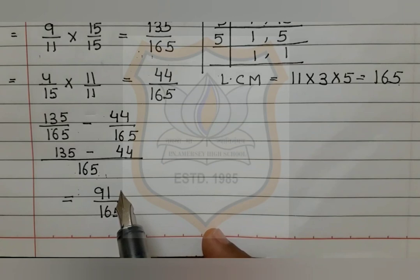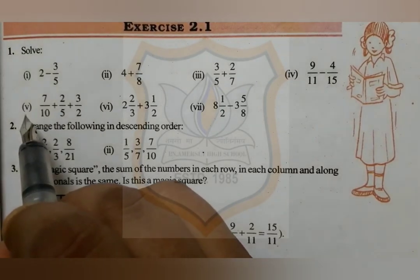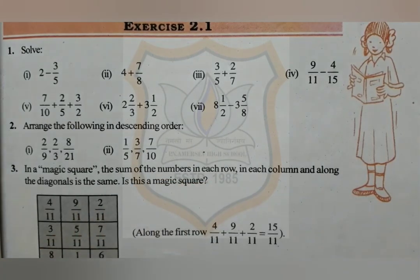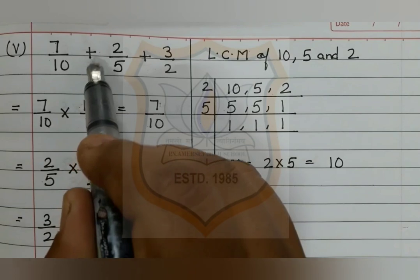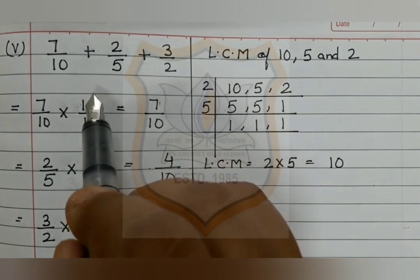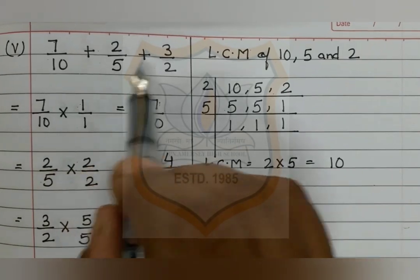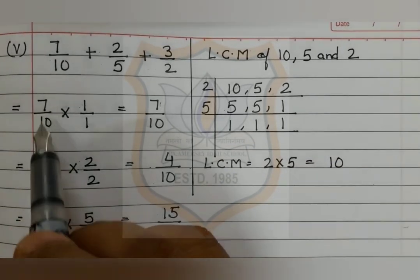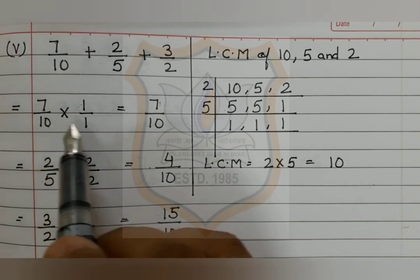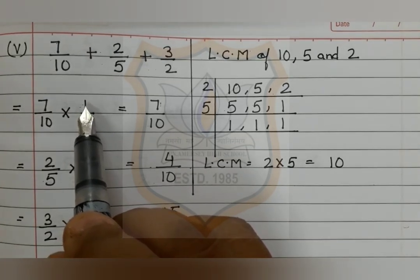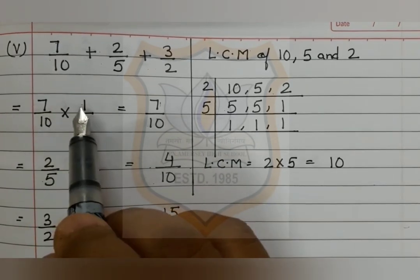The fifth part is 7 upon 10 plus 2 upon 5 plus 3 upon 2. We take the LCM of 10, 5, and 2, which is 10. For 7 upon 10: 10 is multiplied by 1, so the numerator 7 is also multiplied by 1, giving 7 upon 10. For 2 upon 5: 5 is multiplied by 2 to get 10, so 2 is also multiplied by 2 to give 4 upon 10.